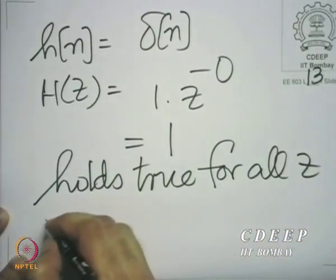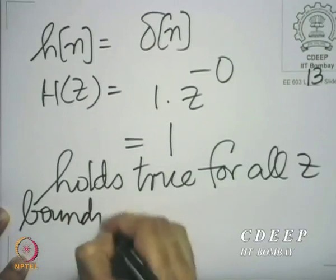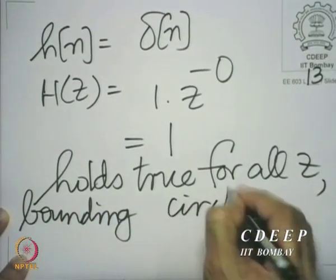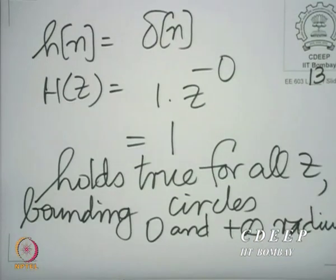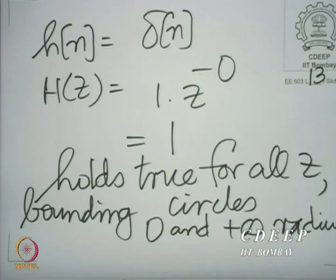Therefore, the bounding circles have 0 and infinite radius. Essentially, the region of convergence lies between the concentric circles of radius 0 and radius plus infinity — the entire z plane is the region of convergence here. In this case, the two boundaries are also part of the region of convergence: the circle of radius 0 and the circle of radius infinity are both included.